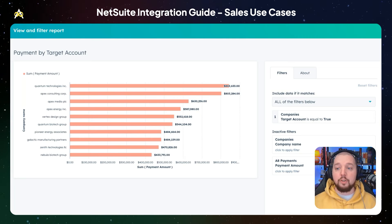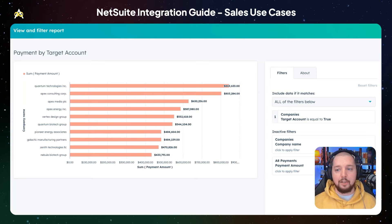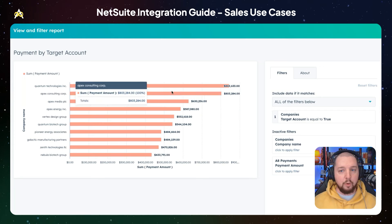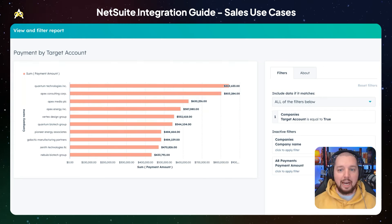In this report, I'm also using HubSpot's ABM target accounts feature. So if you're doing an account-based engagement strategy, you can create a leaderboard of your top target accounts and how engaged you are with those accounts.